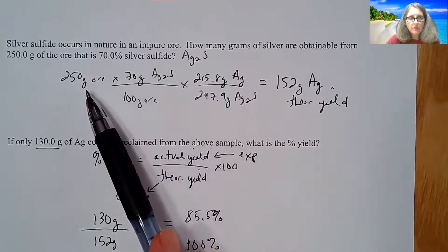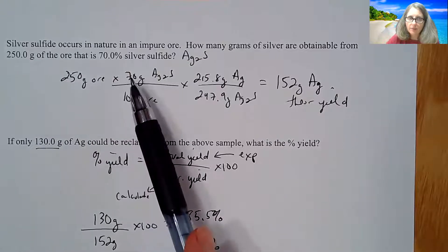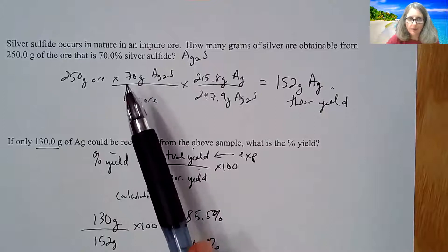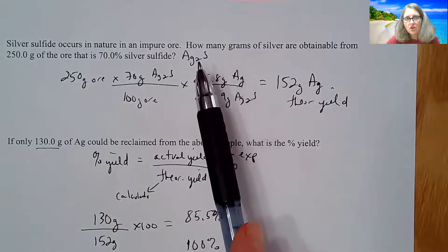If you got the same answers, it doesn't matter how you set this up. But if I start with the 250 grams of that ore, 70% of it is the silver sulfide. I just set it up as a proportion here.